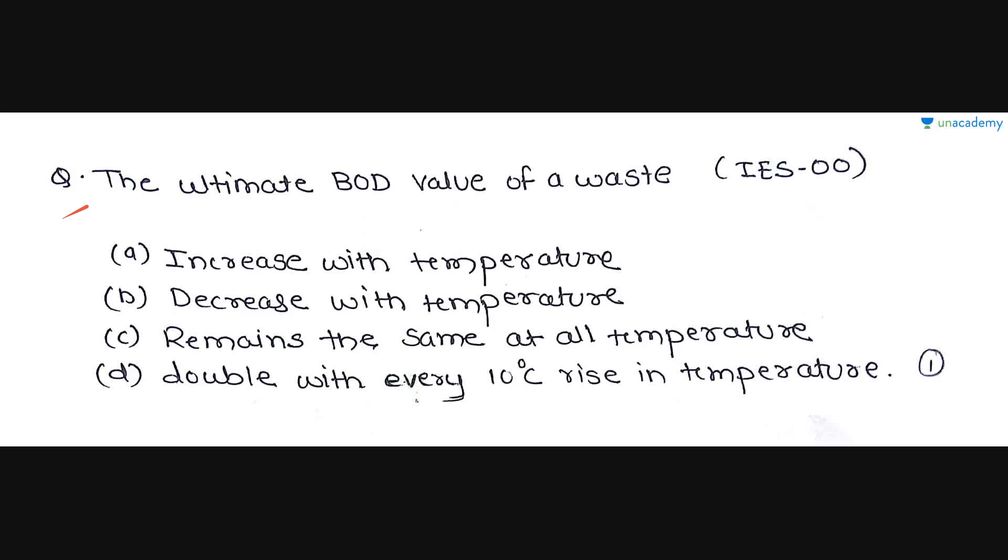These are some one mark MCQs asked in GATE exam. Also we will see some MCQs which were asked in previous question papers. So the first question is, the ultimate BOD value of a waste: Option A is increases with temperature. Option B is decreases with temperature. Option C is remains the same at all temperatures. And option D is double with every 10 degree Celsius rise in temperature. This question was asked in IES 2000.